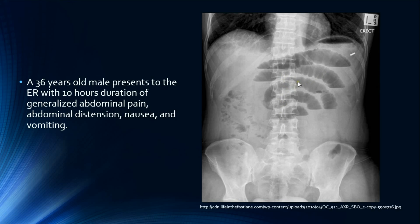Looking for obvious abnormalities, the most striking finding is the air-fluid level we can see in the central and epigastric regions. Since there are valvulae conniventes traversing the whole width of the bowel, and the width of this bowel is more than 3 centimeters, we can say that this is small bowel dilatation.